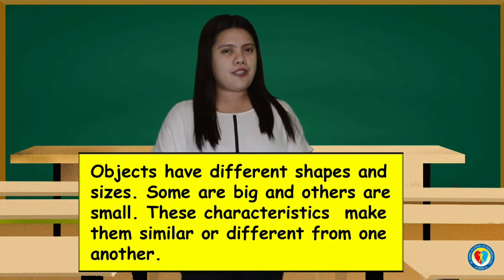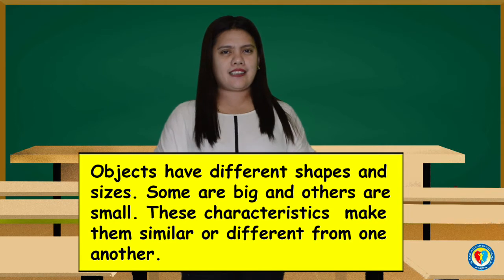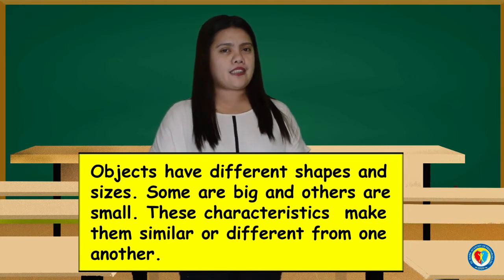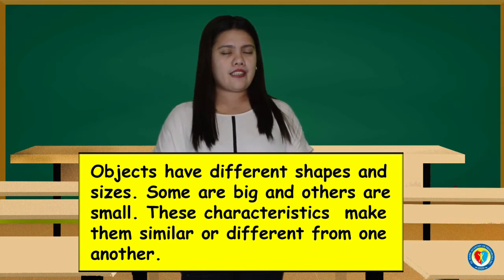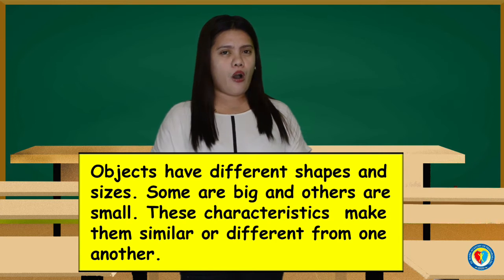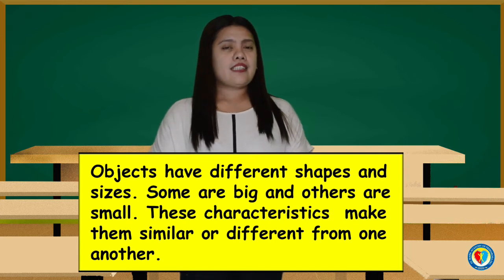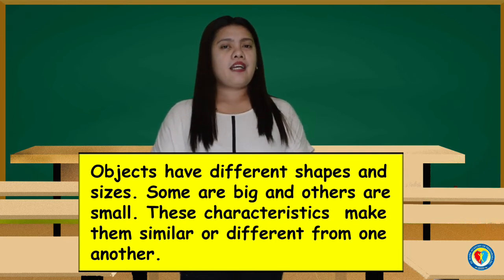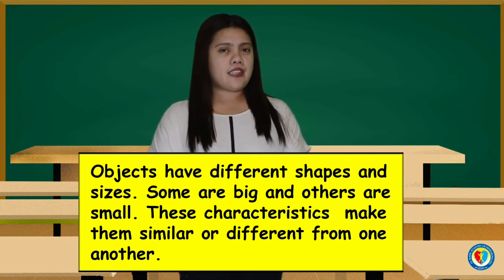Objects have different shapes and sizes. Some objects are big, others are small. These characteristics make them similar or different from one another.